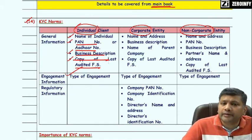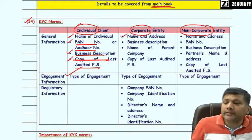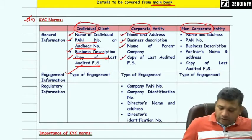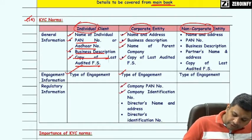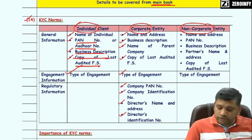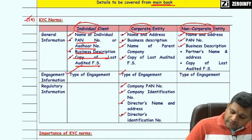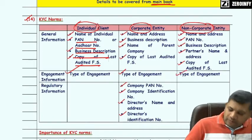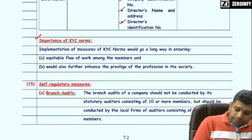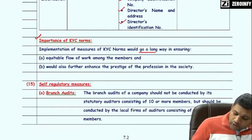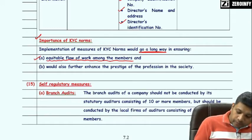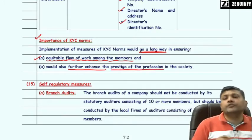For non-corporate entities like partnership firms, KYC details include name and address, PAN number, business description, partner's name and address, copy of last audited financial statement, and types of engagement. The importance of KYC norms: implementation of KYC norms would go a long way in ensuring equitable flow of work among members and would further enhance the prestige and goodwill of the profession in society.